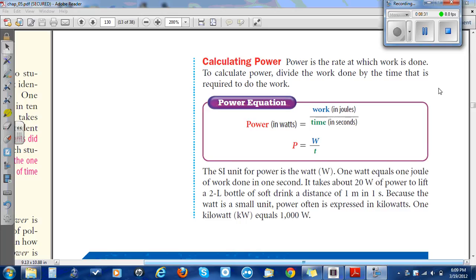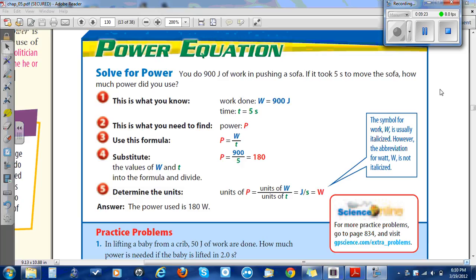Calculating power. Power is the rate at which work is done. To calculate power, divide the work done by the time that is required to do the work. Power in watts equals work in joules divided by time in seconds. Power equals W over T. The SI unit for power is the watt. One watt equals one joule of work done in one second. It takes about 20 watts of power to lift a two liter bottle of soft drink a distance of one meter in one second. Because the watt is a small unit, power often is expressed in kilowatts. One kilowatt equals a thousand watts.